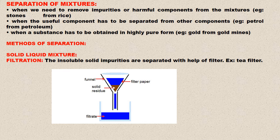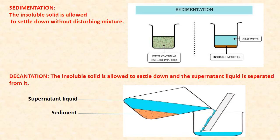Methods of Separation for a solid-liquid mixture. There are three types of methods. Filtration: insoluble solid impurities are separated with the help of filter paper, for example, a tea filter. Sedimentation: the insoluble solid is allowed to settle down without disturbing the mixture. Decantation: the insoluble solid is allowed to settle and the supernatant liquid is separated from it using a glass rod.